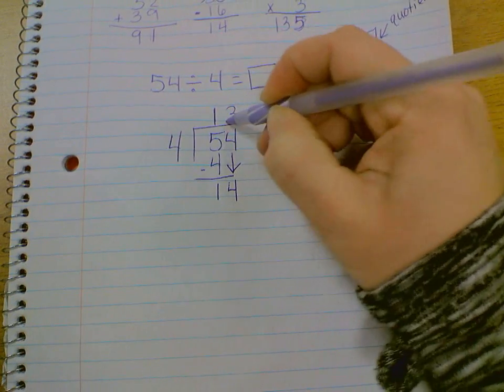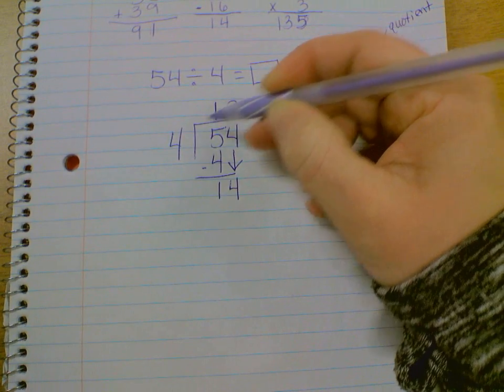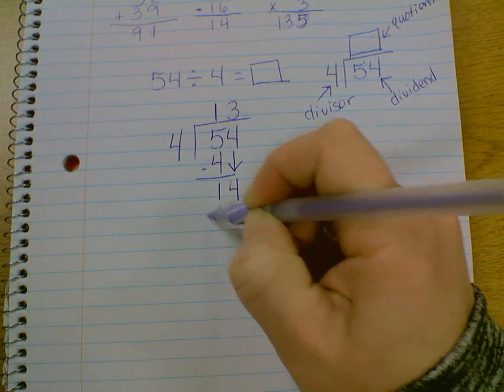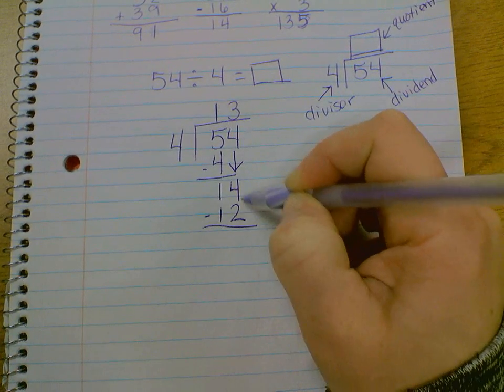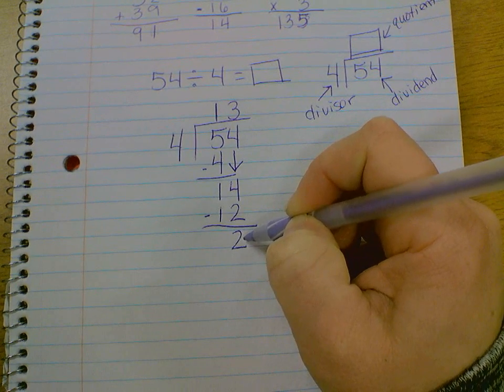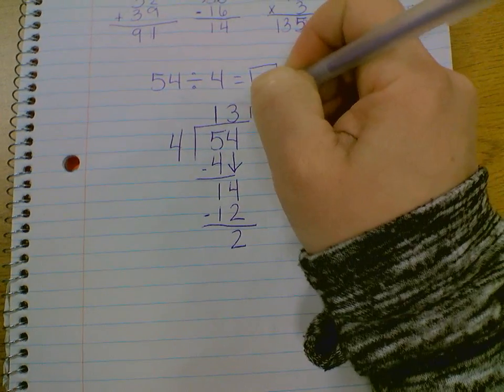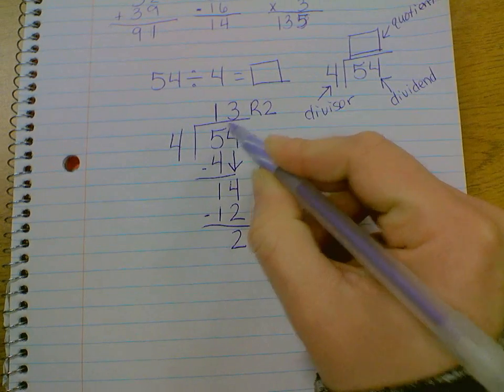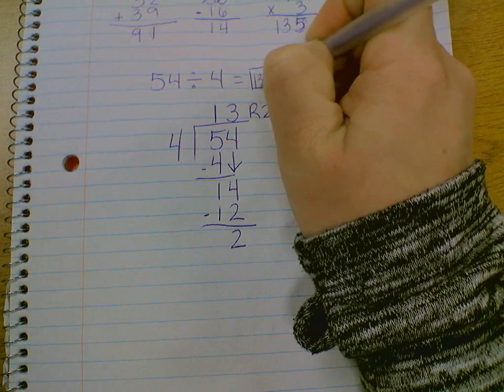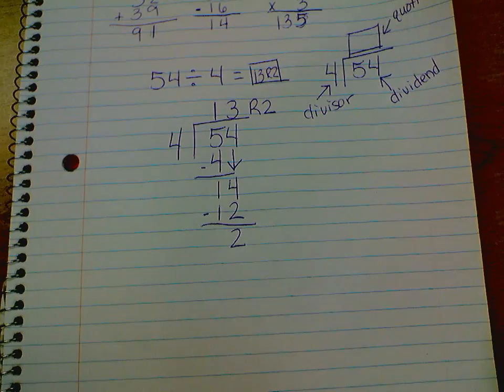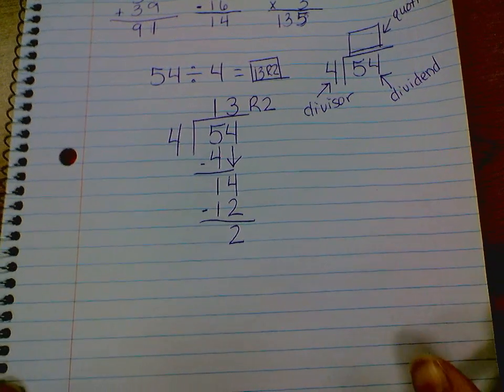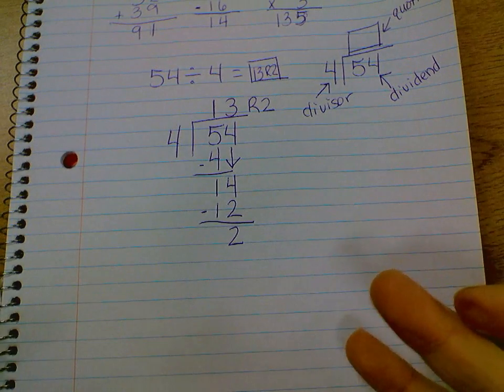So let's get back to our long division up here to see how that works. I have 3 in each group. I'm going to multiply. 3 times 4 is 12. Subtract. 14 minus 12 is 2 for the 2 that I have left over. So, remainder 2. 13 remainder 2 is my quotient. Lovely. Brilliant. So that's how regrouping works in division.